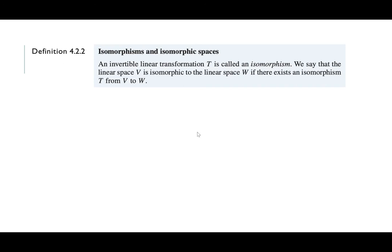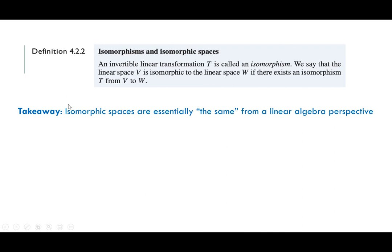Let's look at the definition. An invertible linear transformation is called an isomorphism. Not enough to be linear, not enough to be invertible — you've got to be both. If you have both, then that transformation is called an isomorphism linking the two spaces. So if it goes from V to W, then V and W are isomorphic if they are linked by an isomorphism. The takeaway is that isomorphic spaces are essentially the same from a linear algebra perspective, and isomorphisms tell you when two vector spaces are the same from a linear algebra perspective.